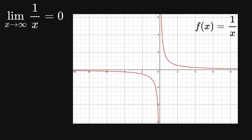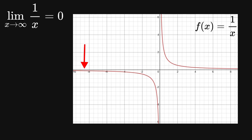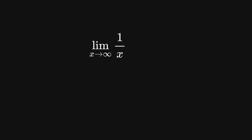You can verify this geometrically through the graph of the function 1 over x. As x increases along the horizontal axis, the curve drops down, getting closer and closer to 0. And if you go the other direction toward negative infinity, the same thing happens — the graph approaches 0 from below. To simplify our expressions from now on, instead of writing the full limit, we'll simply write 1 over infinity equals 0.